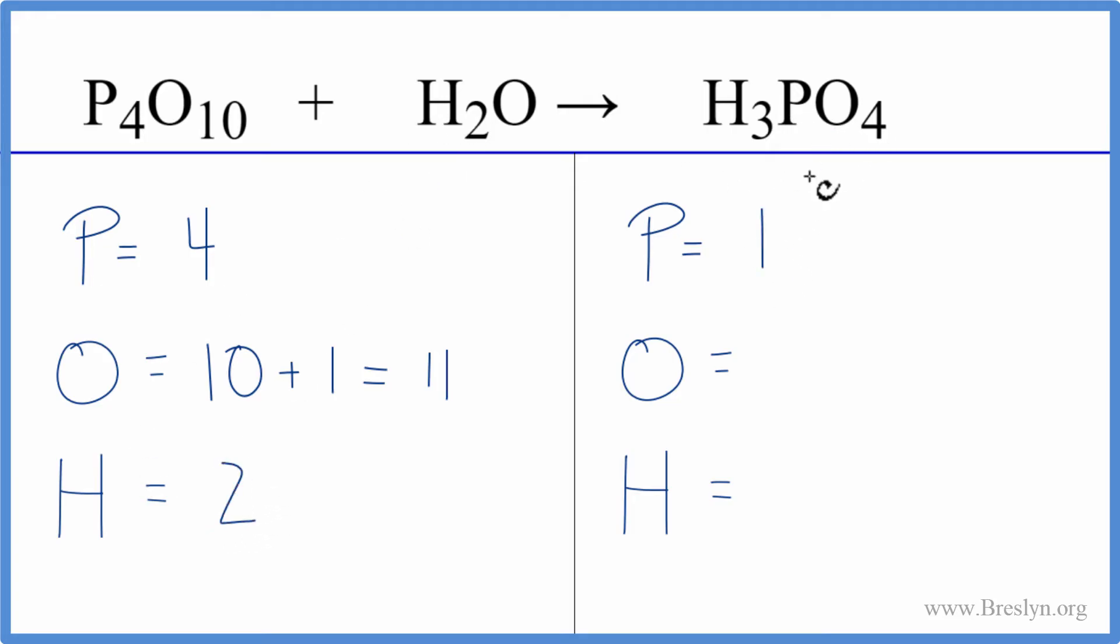On the product side we have one phosphorus, four oxygens, and three hydrogen atoms. It's probably easier to leave the oxygen and hydrogen atoms to last and deal with this phosphorus here.